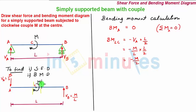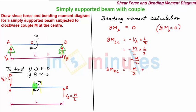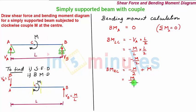Now we move the section towards the right and take a section slightly towards the right of C. The bending moment towards the right of C equals minus M/2, plus the clockwise couple M acting at the center. A clockwise couple on the left-hand side of the section is considered positive, so we add plus M, giving us plus M/2.